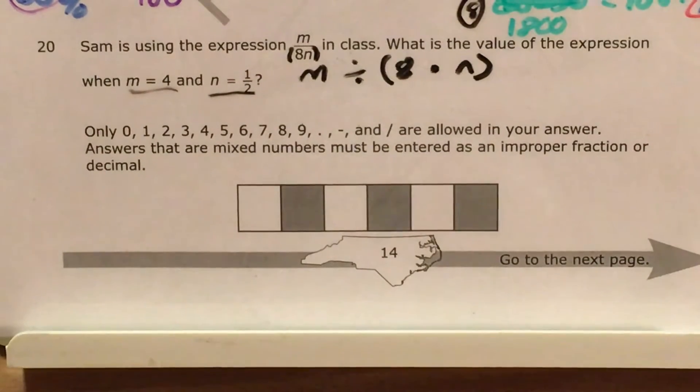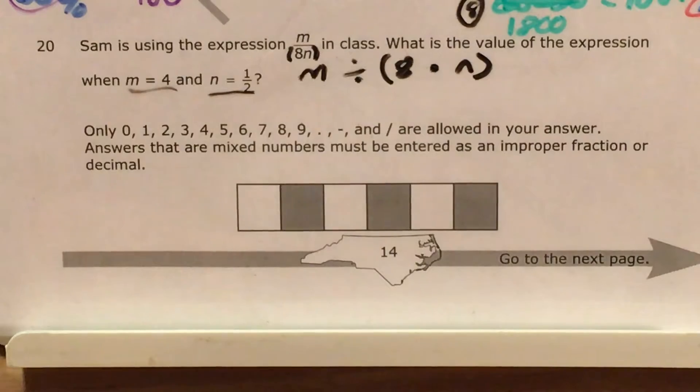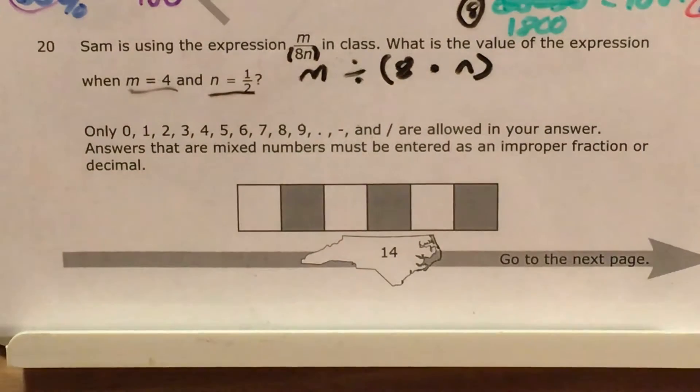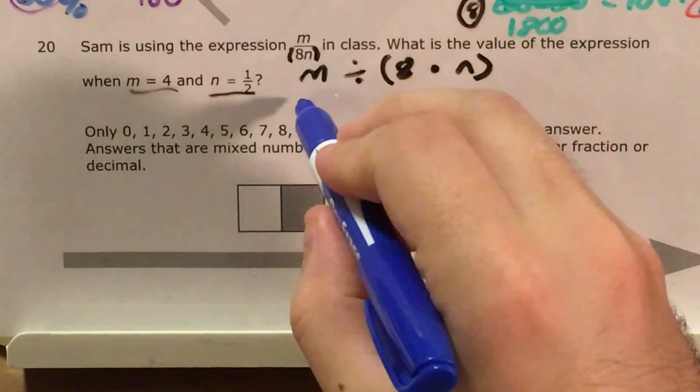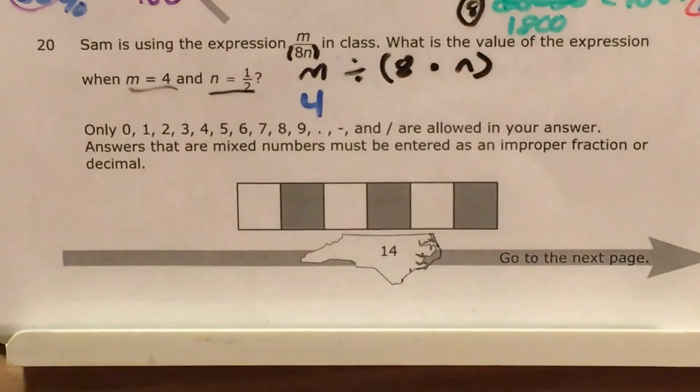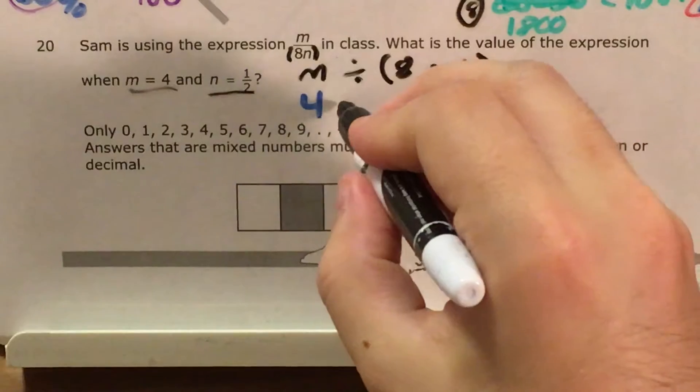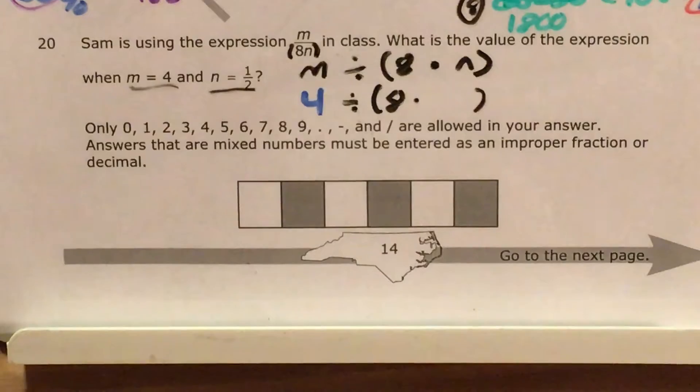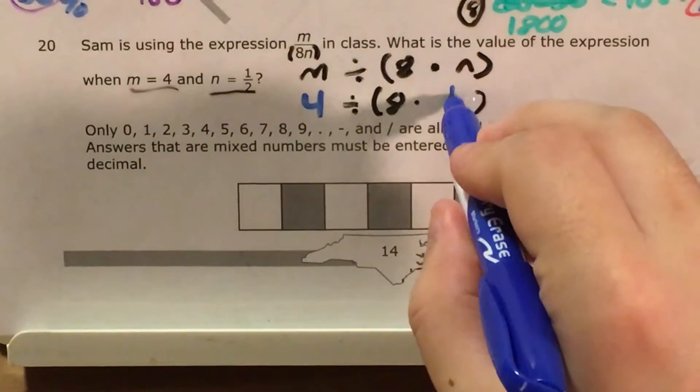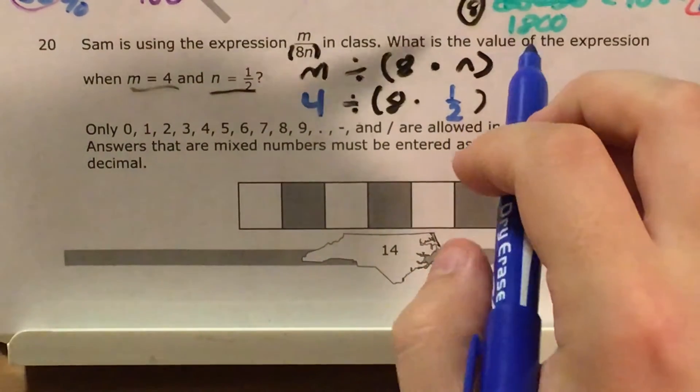So now that I have this expression all on one line, I can go ahead and fill in the values of m and n. So instead of m, this is 4. We're still dividing by 8 times something. But that something now is just 1 half.